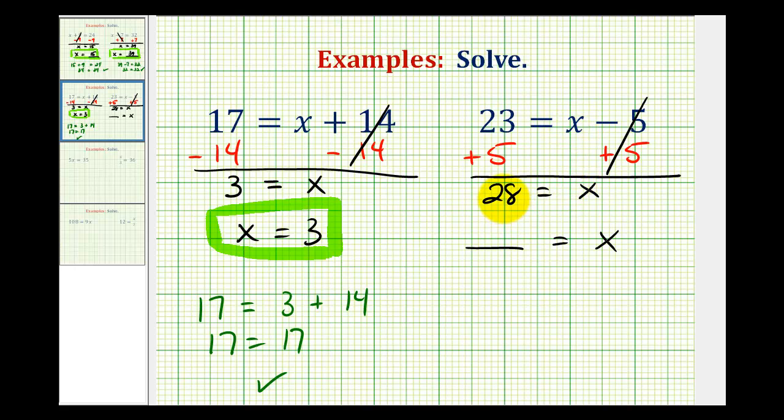Our solution is 28 = x, or we can write this as x = 28. This means if we substitute 28 for x, it must satisfy the original equation. Let's check it. We have 23 = 28 - 5. Well, 28 - 5 = 23, so our solution is correct.